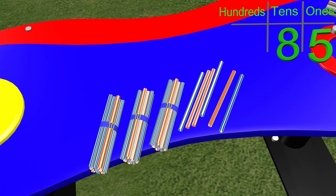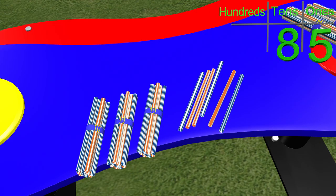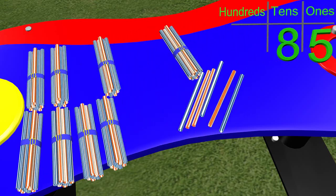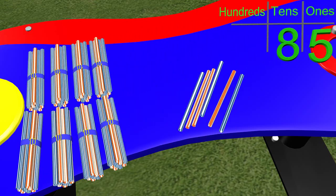How many bundles of 10 do we need to get 80? If you said 8, then you are correct. We need 8 groups of 10 to get 80. Now onto the ones column. We need 5 ones or 5 single straws.